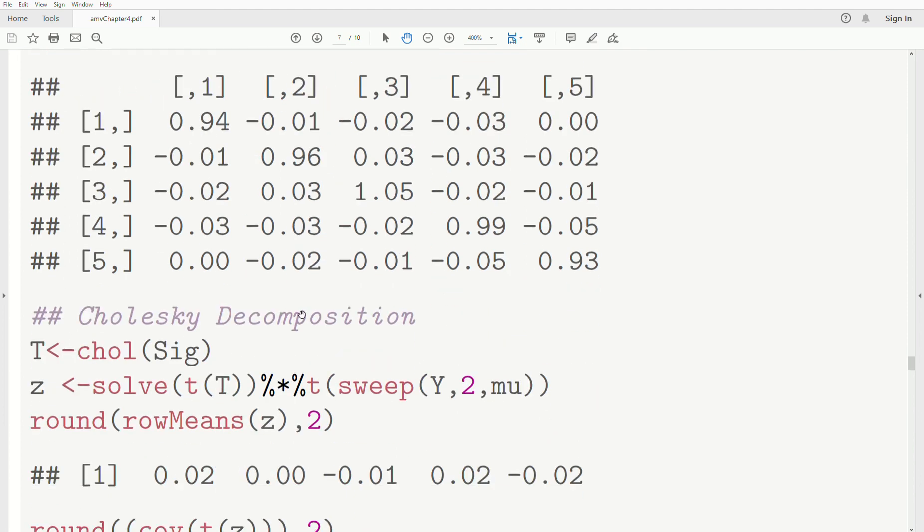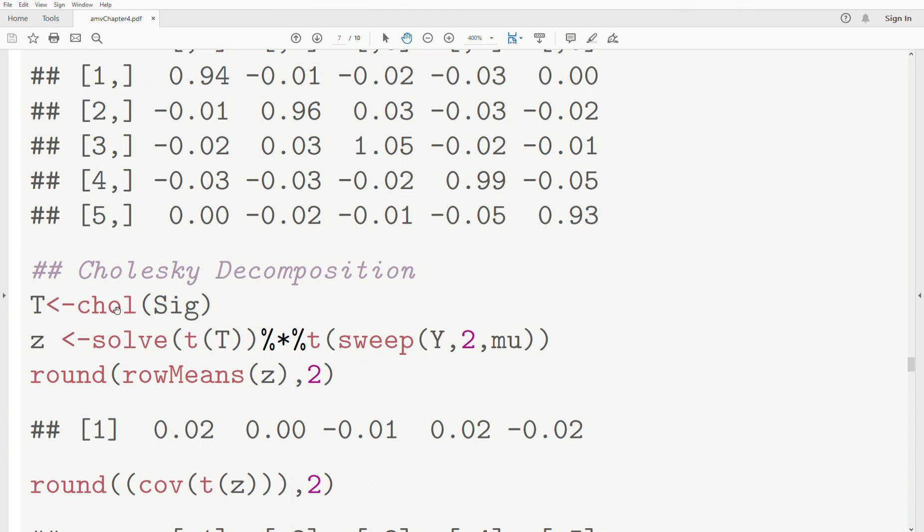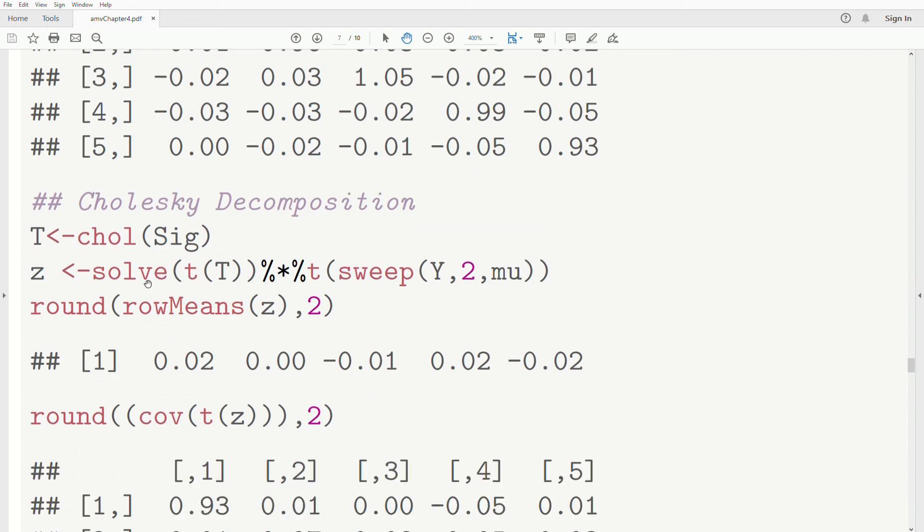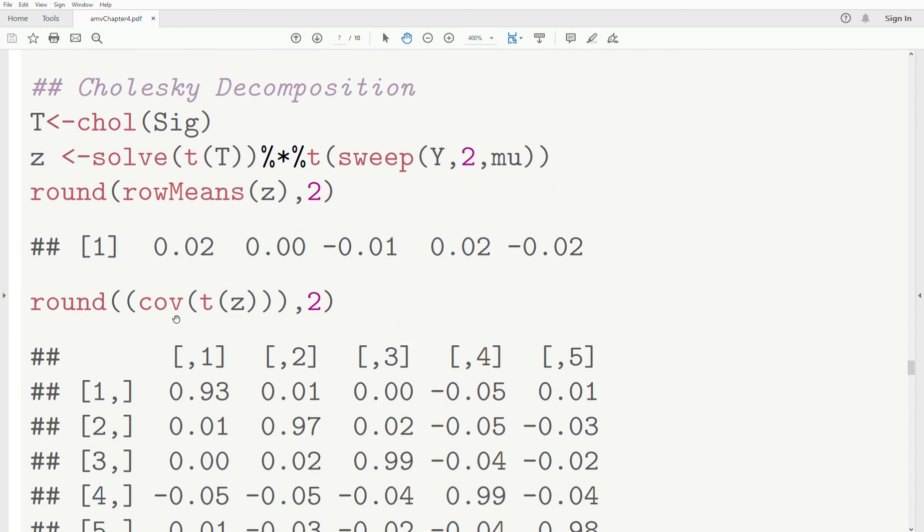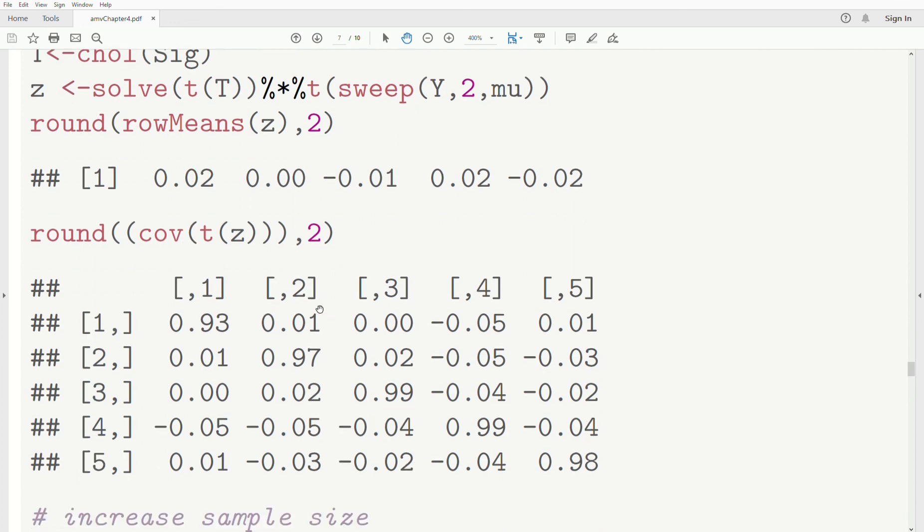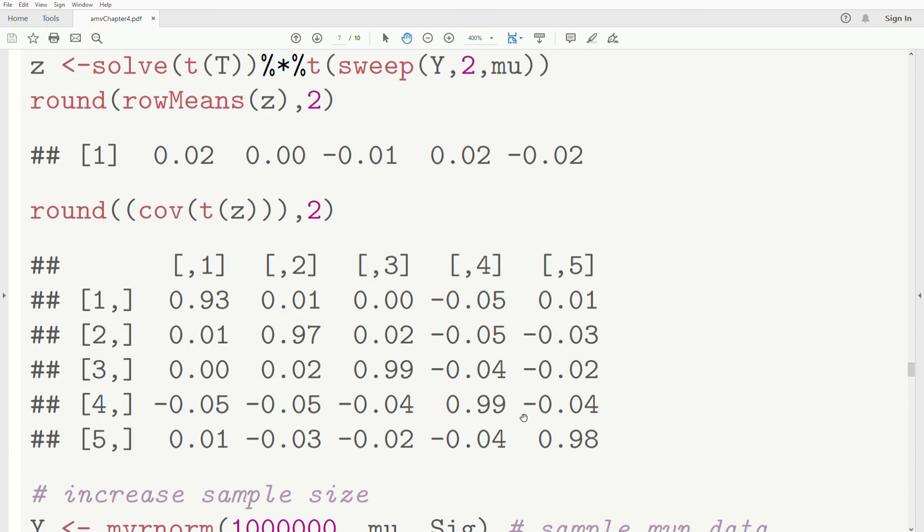We could have used Cholesky's decomposition. So we take the Cholesky decomposition of the covariance matrix, call it T, and then we take the inverse of T, the transpose of T, times this Y minus mu, which we did with sweep. Look at the row means, and they're pretty close to zero, rounded to two decimals. And then the covariance of this transformation is pretty close to ones down the diagonal and zeros in the off diagonal.